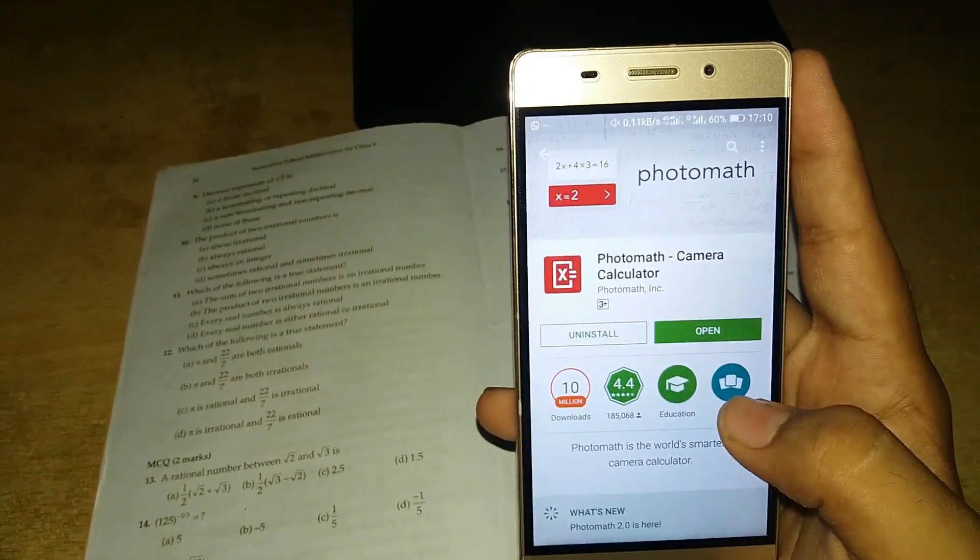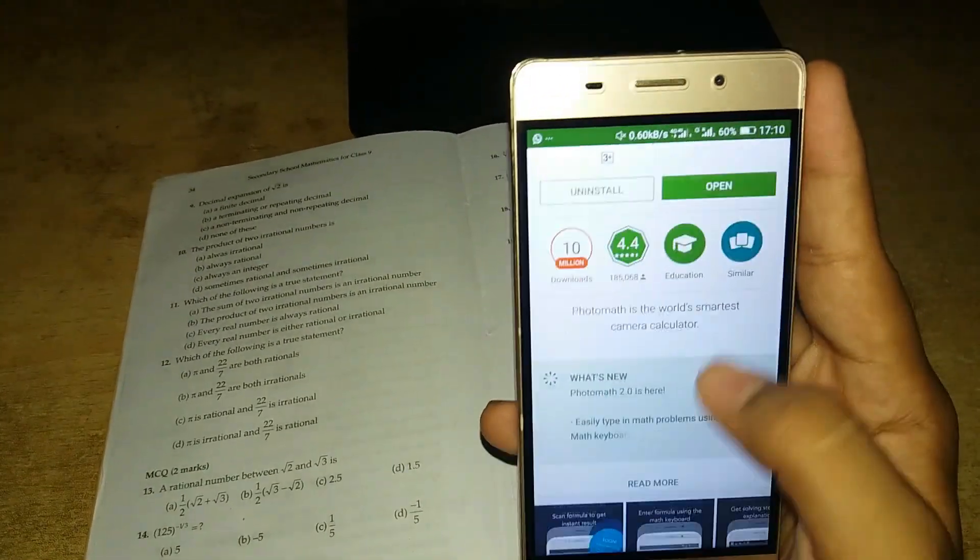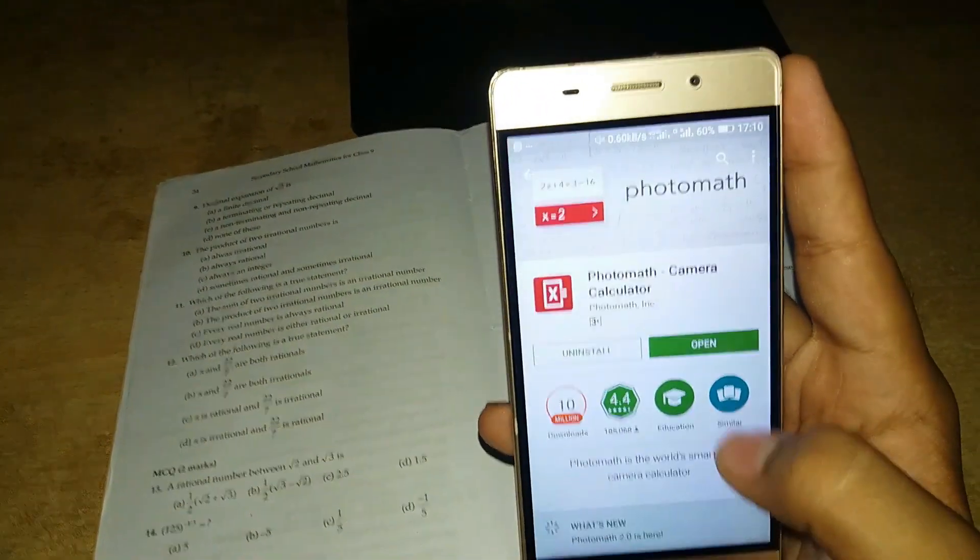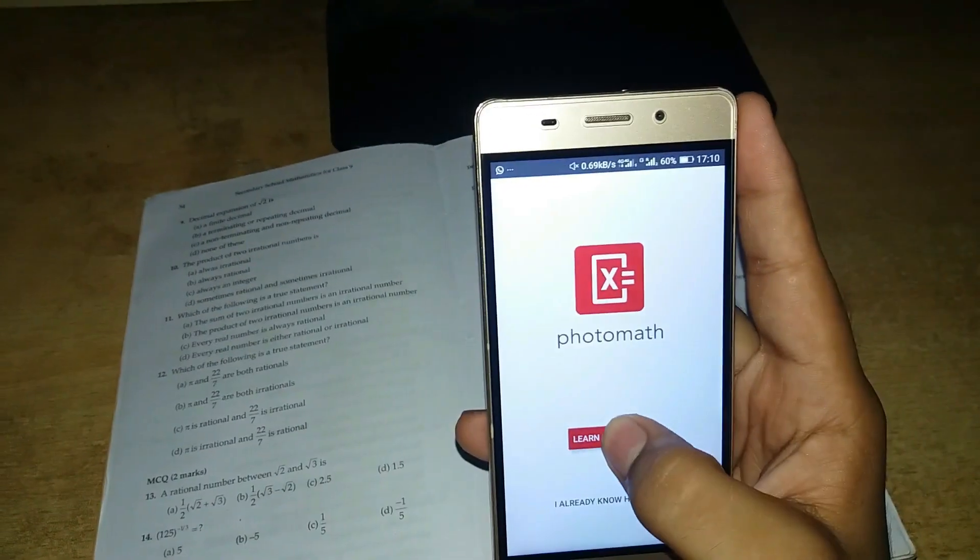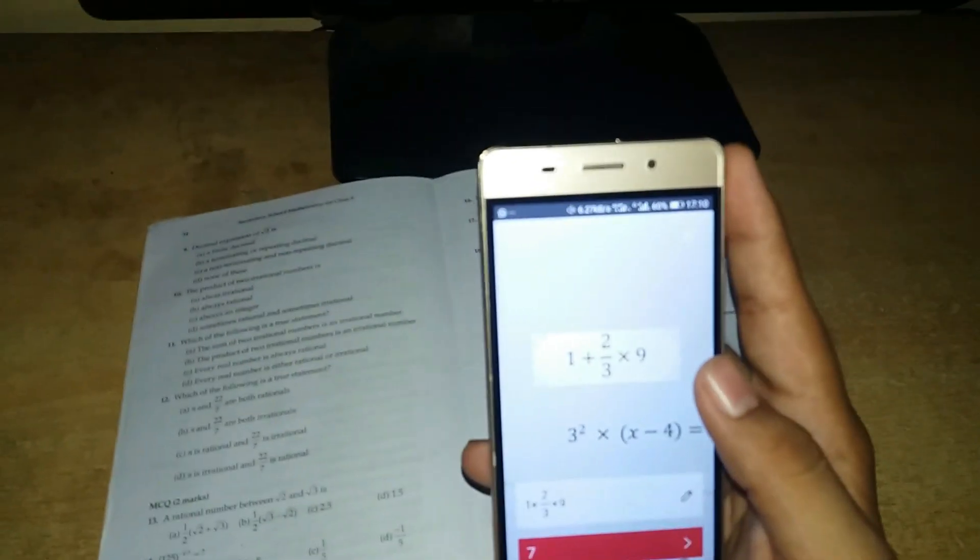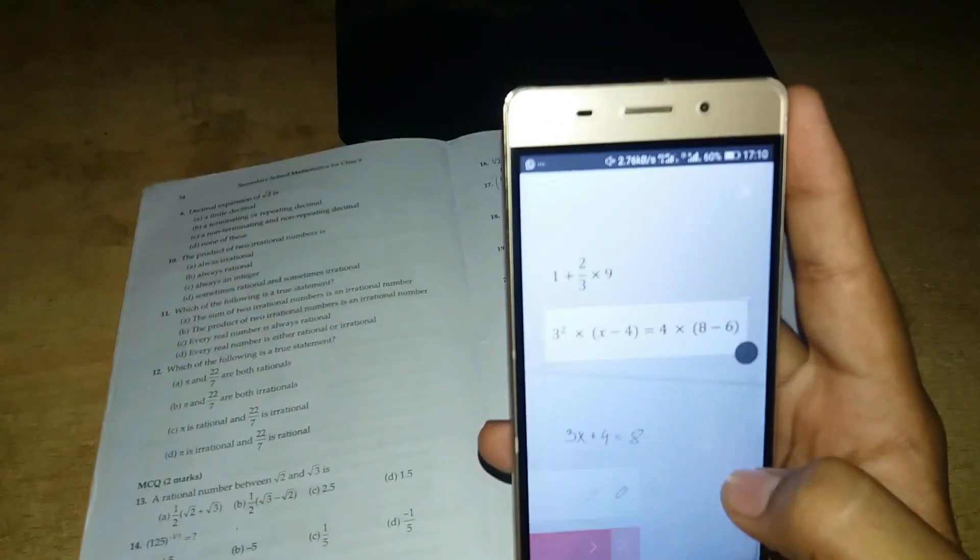Let's go to Photomath. We have given the link in the description. Let's click open. Let's click learn how to use. Here is the equation detector detecting the equation and it gives instant result.